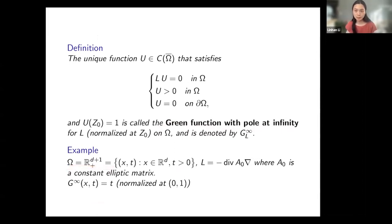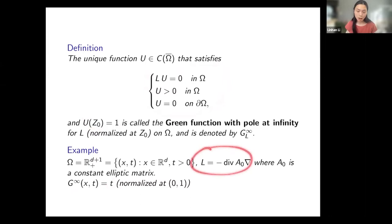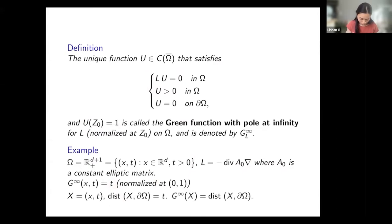As an example, consider the upper half space as our domain, where t is the transversal variable. Let L be an elliptic operator with constant coefficient matrix A0. We can check that the function t satisfies all the required conditions, so the Green function with pole at infinity for this operator in the upper half space, normalized at the point (0,1), is just t. If we normalize at a different point, the Green function is simply a constant multiple of t. Thus, for a constant elliptic operator, the Green function with pole at infinity on the upper half space equals the distance function.